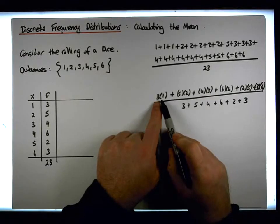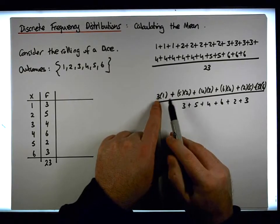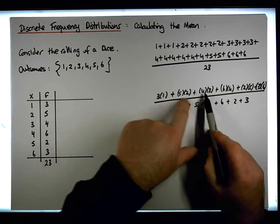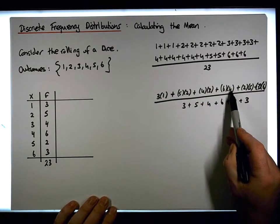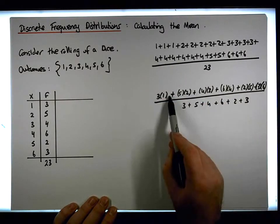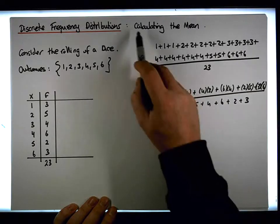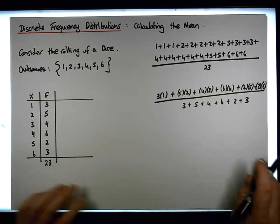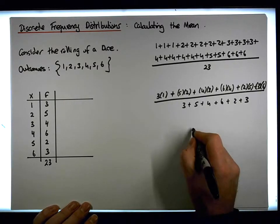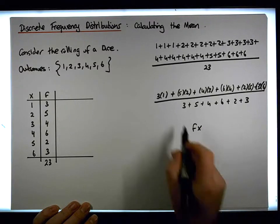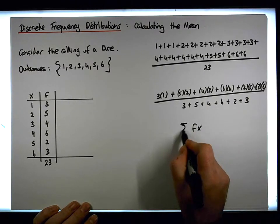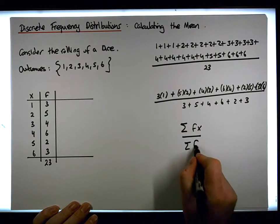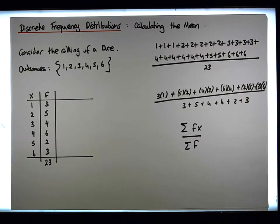Each one of these numbers is essentially the frequency times the observation, and we're adding them together. So effectively, to calculate the mean when we have frequencies and observations, it's simply the frequency times the observation, and we sum them up across all observations divided by the sum of the frequencies. That's effectively how we calculate the mean.